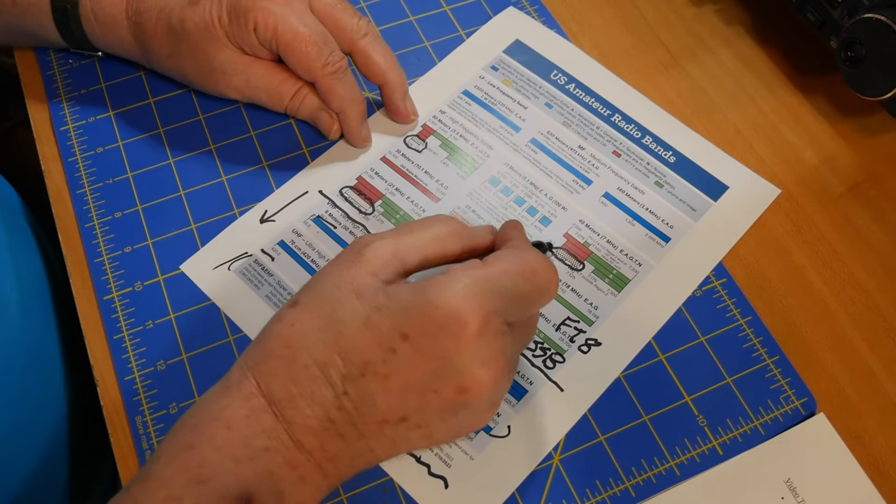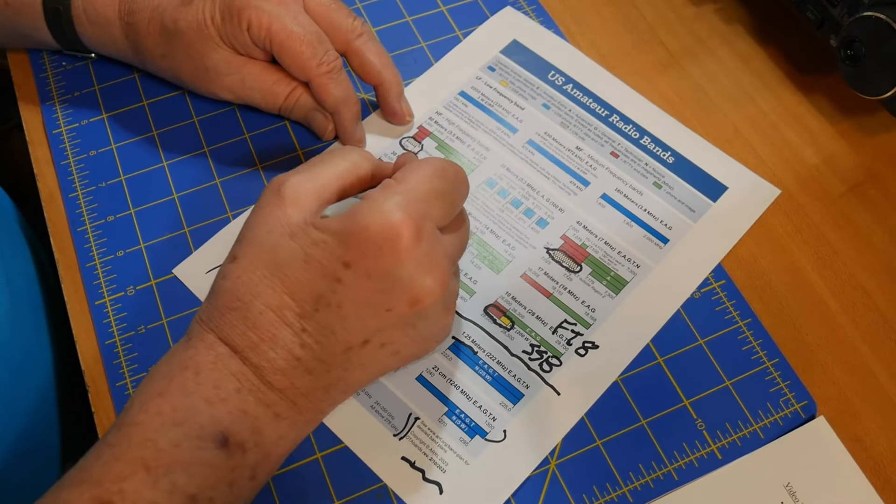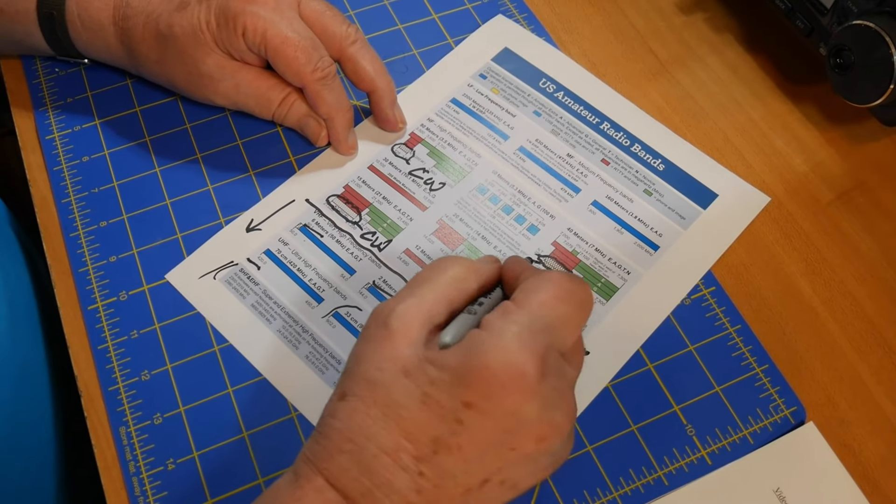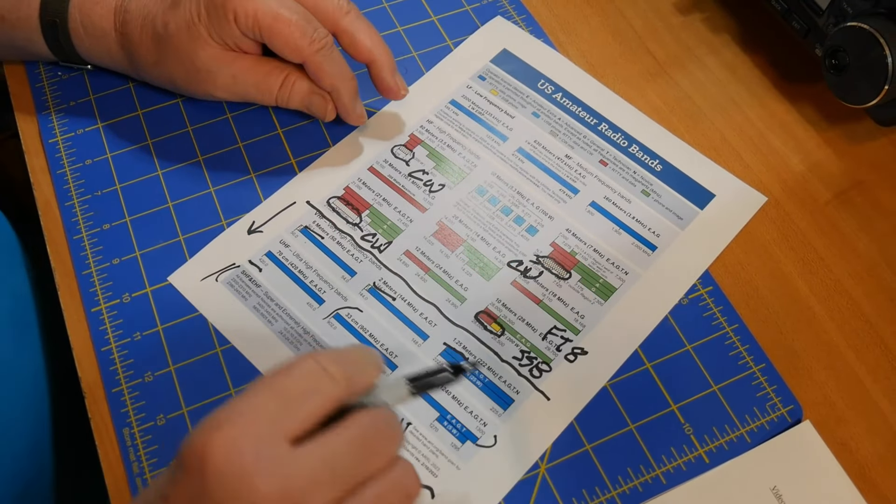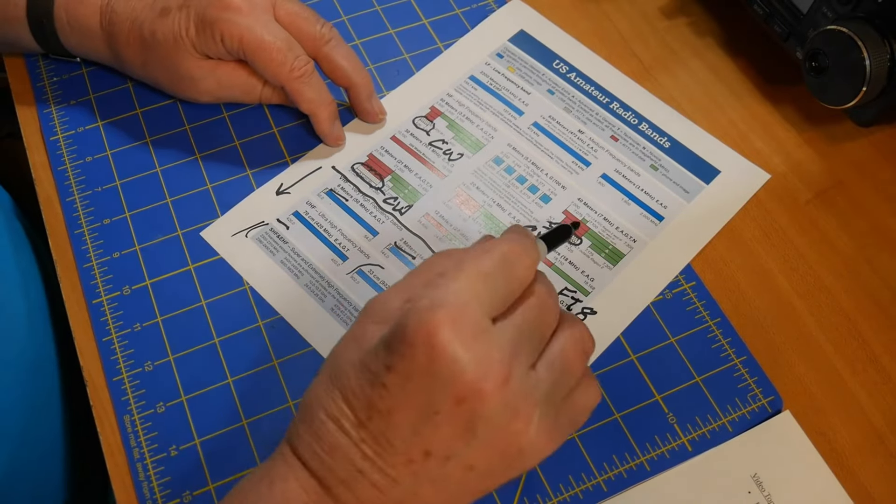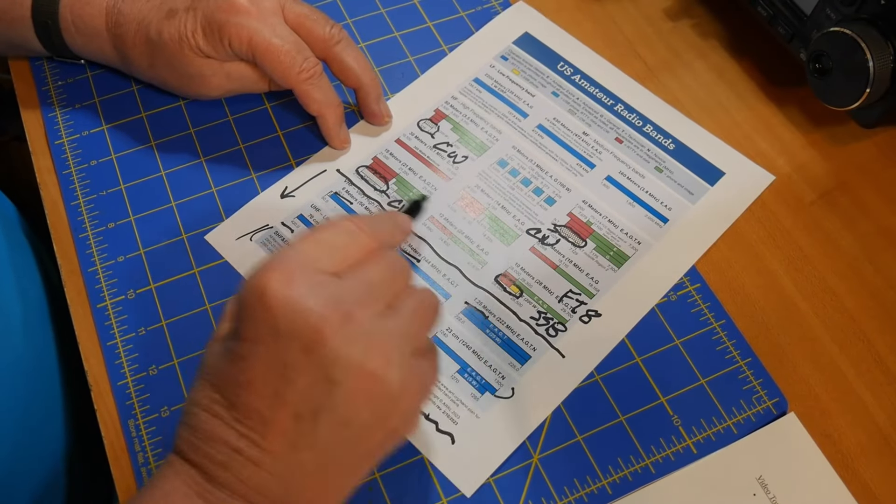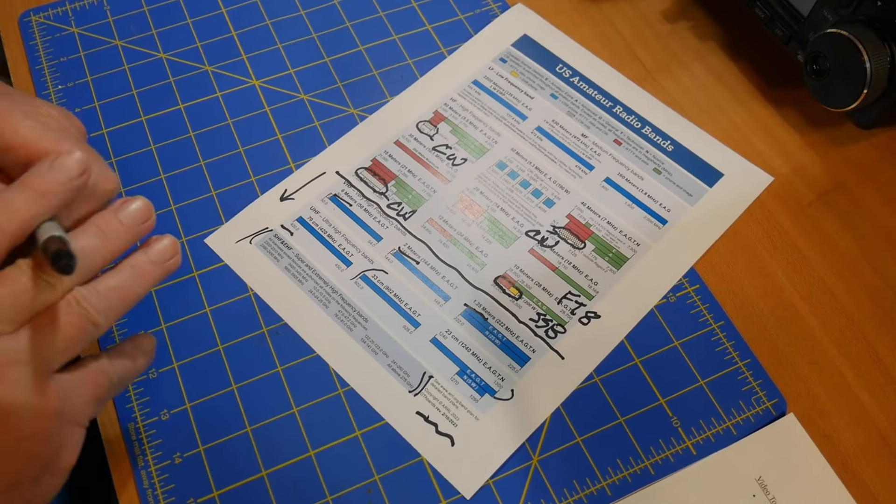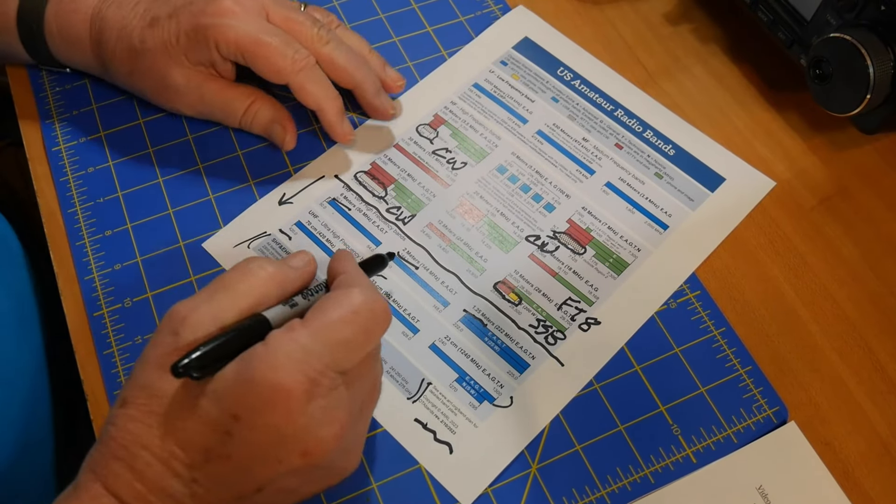Now, these are CW only, meaning Morse code. And I would recommend starting on the 40 meter band because there's a lot of activity there. There are places here on these bands where you can do slow code. So if you're just starting out, you can do code there.